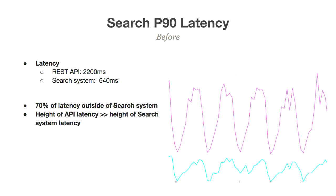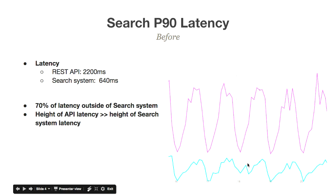The problem we were facing at Pinterest was things were really, really slow. I was working on the search subsystem, and the API latency for the search system was just over two seconds. That's not including network — that's just on our side, measuring on the varnish layer. The actual system that does the searching was only a small percentage of that, about 70%.